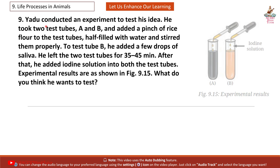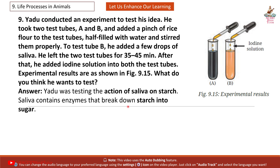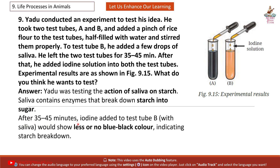Question 9: Yadu conducted an experiment. He took two test tubes A and B and added a pinch of rice flour to each, half-filled with water, and stirred them properly. To test tube B, he added a few drops of saliva. He left both test tubes for 35 to 45 minutes, then added iodine solution. What do you think he wants to test? Answer: Yadu was testing the action of saliva on starch. Saliva contains enzymes that break down starch into sugar. After 35 to 45 minutes, iodine added to test tube B with saliva would show less or no blue-black color, indicating starch breakdown.